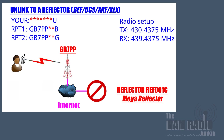To unlink from any reflector or repeater, the user would enter seven spaces and a U to indicate unlink in the Your section. Again, RPT1 and RPT2 are unchanged.